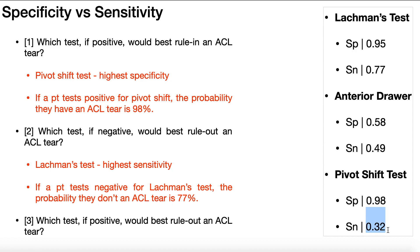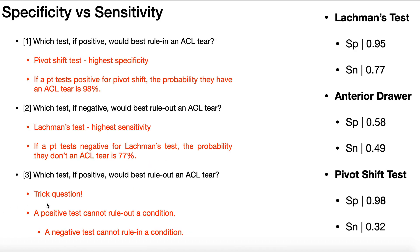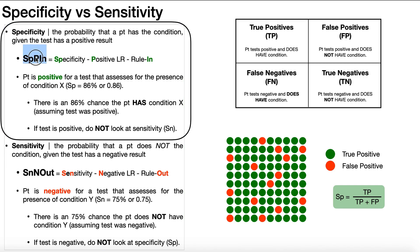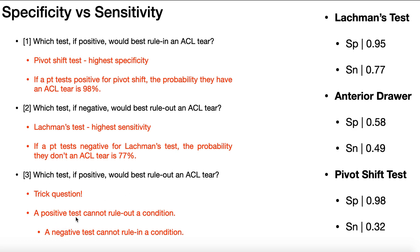Question three: which test, if positive, would best rule out an ACL tear? This is a trick question. If we have a positive result, we're not looking to rule out — we're looking to rule in. Recall SpIN: a positive result points to specificity and ruling in. The only way to rule out is with a negative result. So a positive test cannot rule out a condition; it can only rule in a condition. Likewise, a negative test can only rule out, not rule in.